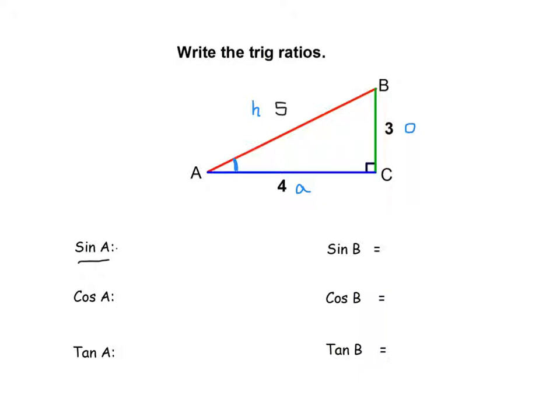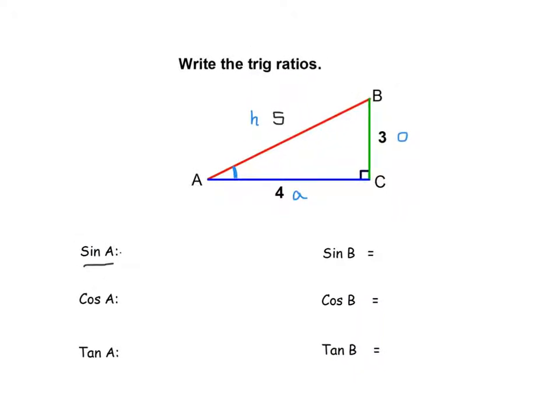All right, sine is opposite, I'm going to use an O, over the hypotenuse. So sine of A equals 3 over 5.